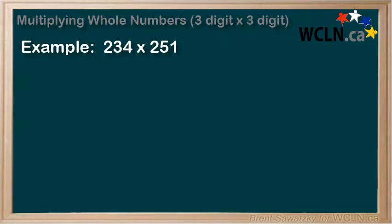234 times 251. In this case, we're dealing with 3 digits times 3 digits. Really, there's no limit to the number of digits you can deal with when multiplying like this, but we'll stop with the 3x3s.